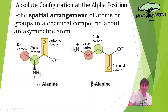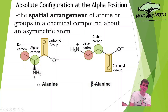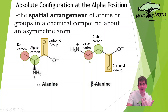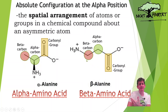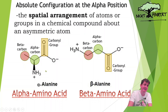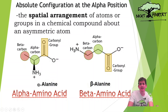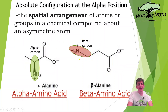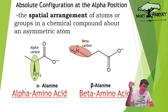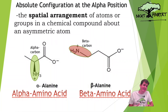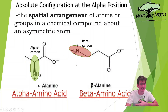We have an alpha amino acid and a beta amino acid — what's the difference? We find our carbonyl carbon; the carbon directly connected is our alpha carbon, and the carbon two carbons away is our beta carbon. Why are these called alpha and beta amino acids? You have to look at the amino group, the NH3. If the amino group is connected to the alpha carbon, it's an alpha amino acid. If it's connected to the beta carbon, it's called the beta amino acid. We're going to be working with alpha amino acids — that's what we find in our body and in nature mostly.